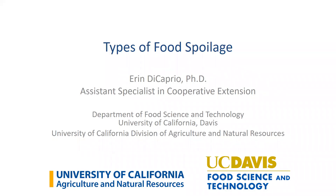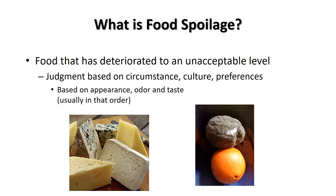Here we will talk about types of food spoilage. Spoilage is really a judgment of when food has deteriorated to an unacceptable level. This is often influenced by culture, personal preferences, and individual circumstances.